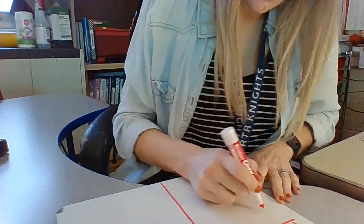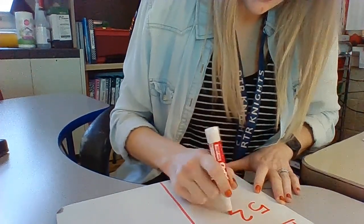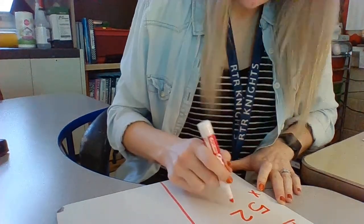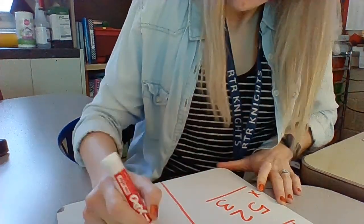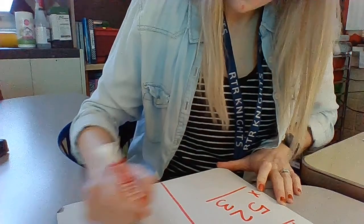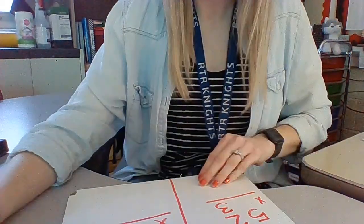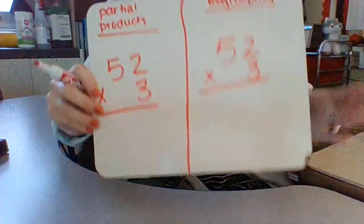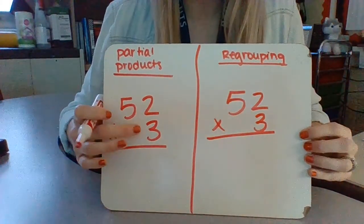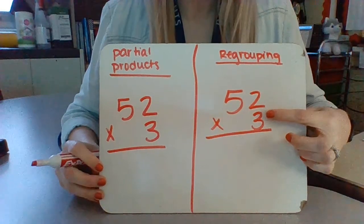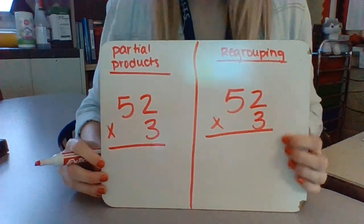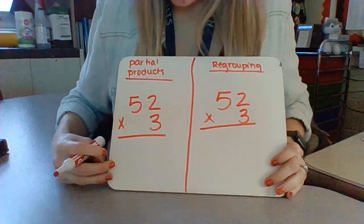Let's do 52 times 3. All right, so we're going to do 52 times 3. We're going to do it with partial products, and then we're going to do it with regrouping, which you just saw. So let's start with partial products.